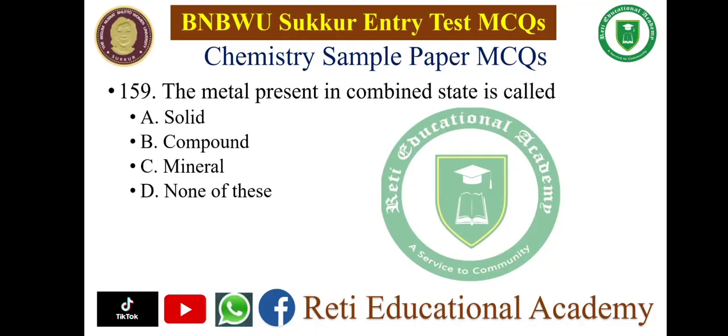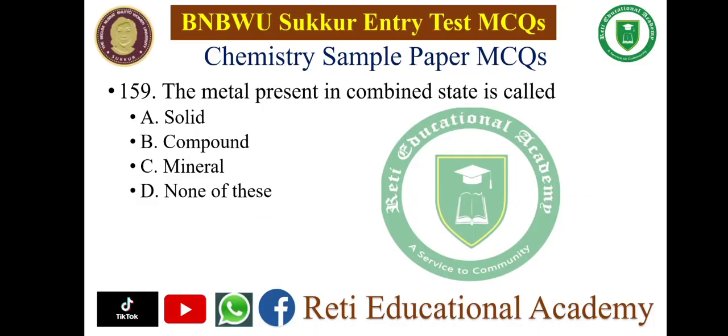Question number 159: The metal present in combined state is called? A. Solid, B. Compound, C. Mineral, D. None of these. The correct answer is C — Mineral. The metal present in combined state is called a Mineral.